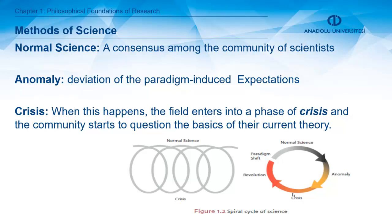Kuhn describes the generation of science with a cyclical figure. First, there is normal science — a consensus among the community of scientists who share common beliefs and principles. Then, one day an anomaly happens: a deviation from paradigm-induced expectations, meaning scientists encounter something contrary to normal science. At this point the field enters a phase of crisis, and the community starts to question the basics of their current theory.